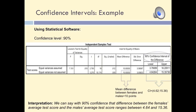These results indicate that females typically score higher than males on this test. And in 90% of the cases, this difference is somewhere between 4.64 and 15.36 points. This interval is quite large, and this is because our samples are so small. I chose these samples just to ease the computation process, but in reality we should not estimate a confidence interval with such small samples.